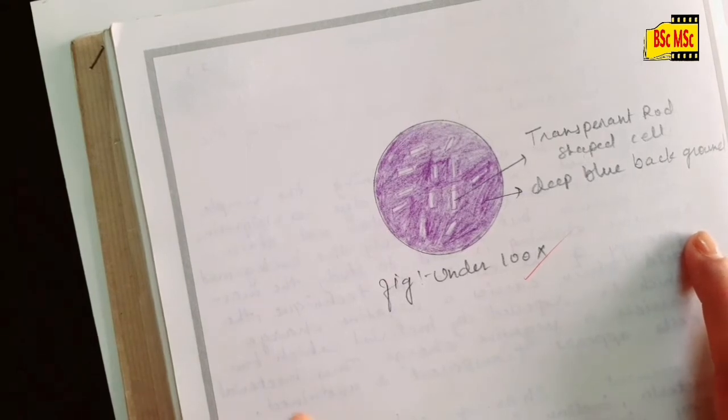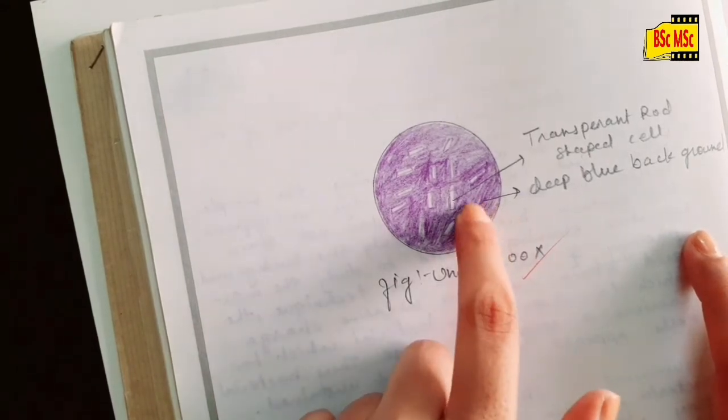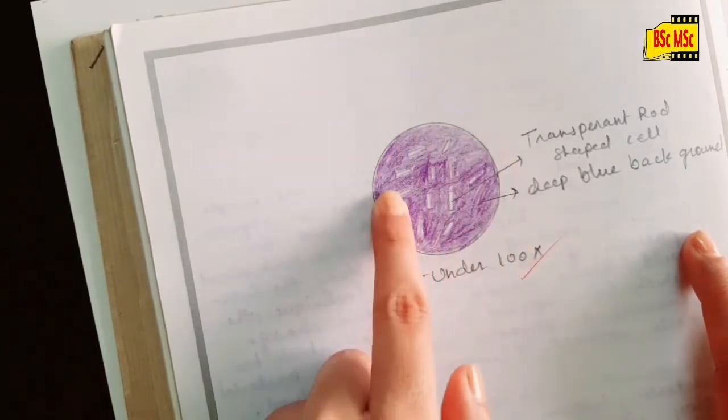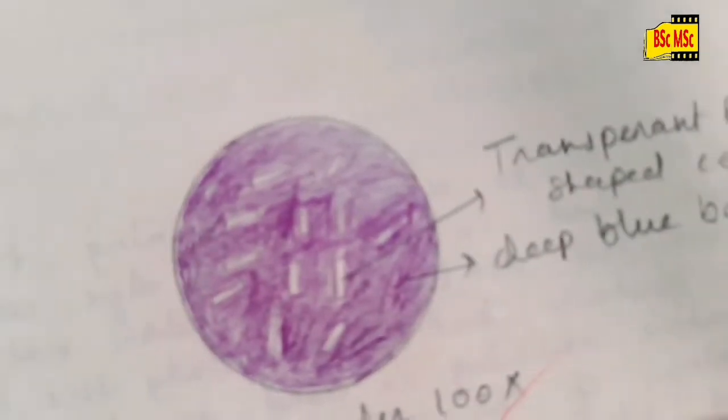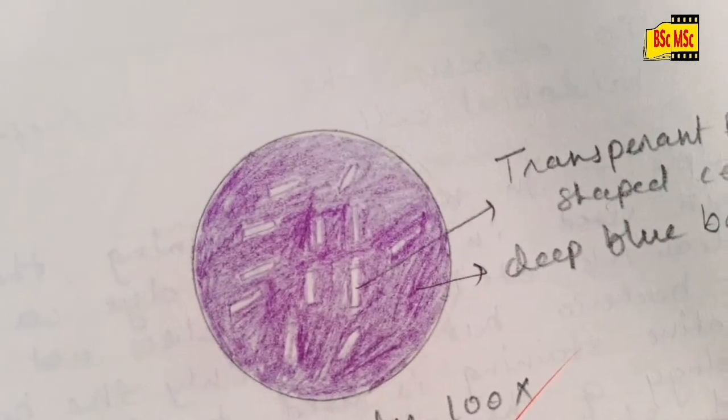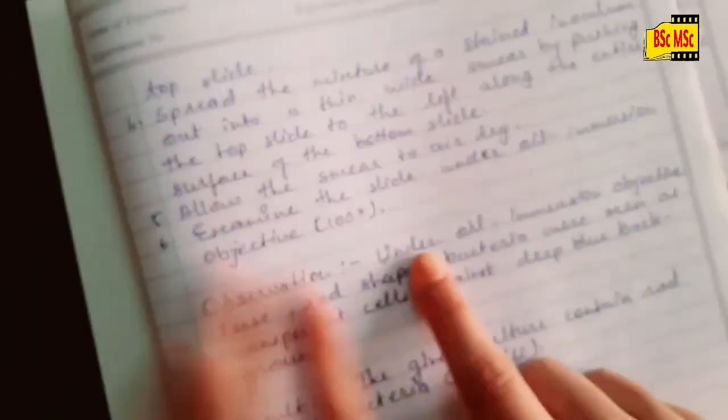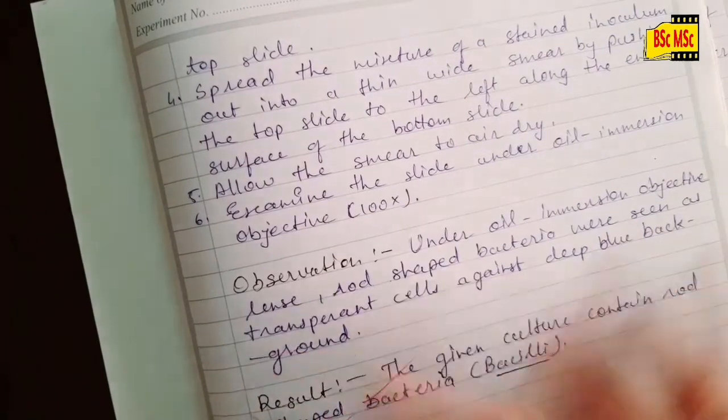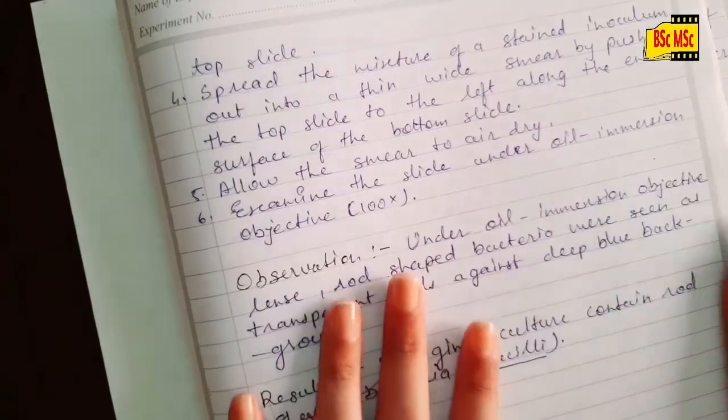See, this dark blue color is the background because of the ink, and you can see the rod-shaped bacteria. I have written the observation over here. So this experiment ends now.